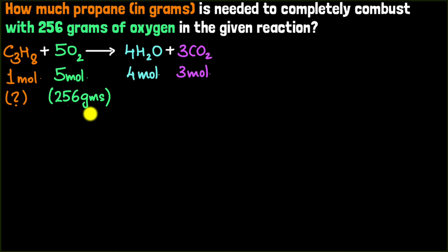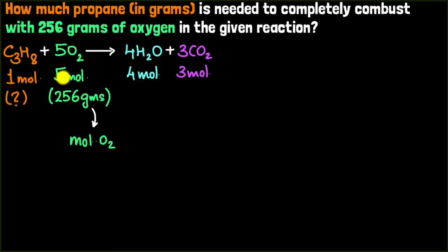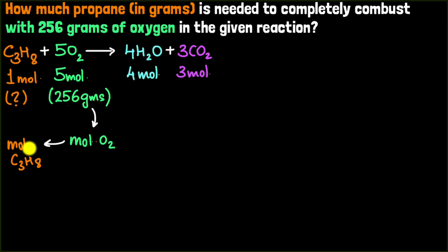So what do we do? If we can convert the given grams of oxygen into moles, we can use the mole ratio to convert from moles of oxygen to moles of propane — something we've seen in previous videos. And since we want grams of propane, we then convert back from moles of propane to grams of propane.